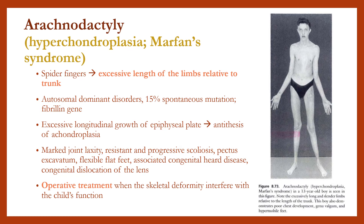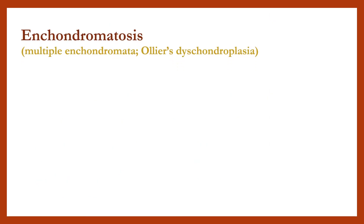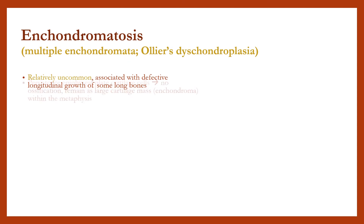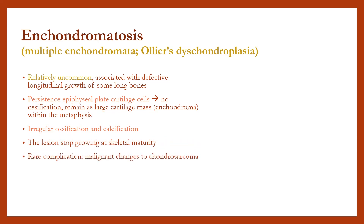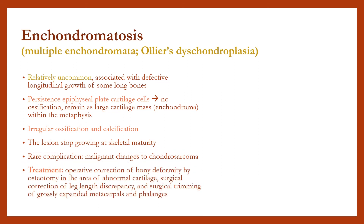Enchondromatosis is relatively uncommon, associated with defective longitudinal growth of some long bones. Epiphyseal plate cartilage cells show no ossification, remaining as large cartilage masses within the metaphysis, with irregular ossification and calcification. The lesions stop growing at skeletal maturity. A rare complication is malignant change to chondrosarcoma. Treatment involves operative correction of bony deformity by osteotomy in areas of abnormal cartilage, surgical correction of leg length discrepancy, and surgical trimming of grossly expanded metacarpals and phalanges.